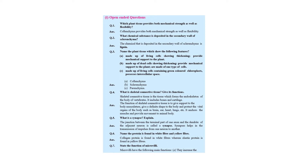What is skeletal connective tissue? This is from the zoology portion — a mix of plant tissues and animal tissues. Skeletal connective tissue is a tissue which forms the endoskeleton of the body of vertebrates. It includes bones and cartilage. Its function is to support the body musculature, give a definite shape to the body, and protect vital organs such as the brain, ear, heart, and lungs.